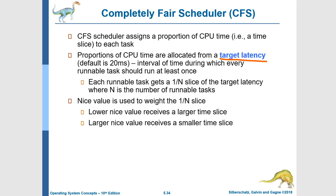There are some tasks that we want to give more preference and others less preference, via a lower or higher nice value. So how does that work if we're giving all of them exactly a 1/n time slice — it looks like they're all getting an equal time slice. The key is that we are going to weight their run time. Instead of using the actual run time to calculate whether they have gotten their full 1/n time slice, we're going to use a weighted virtual run time.